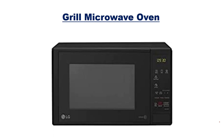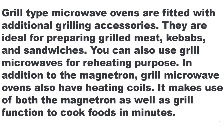The second type is the grill microwave oven, which has additional features. In addition to the magnetron, grill microwaves also have heating coils. They are ideal for preparing grilled meat, kebabs, and sandwiches, and can also be used for reheating. They make use of both the magnetron and the grill to cook food quickly.